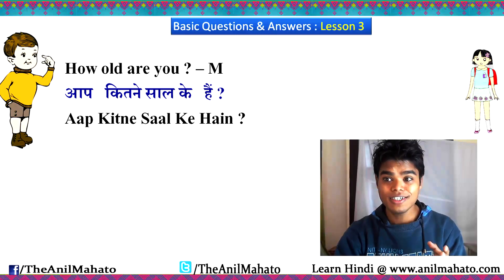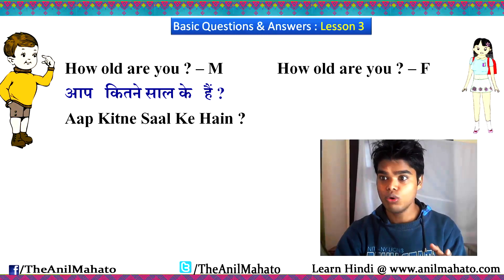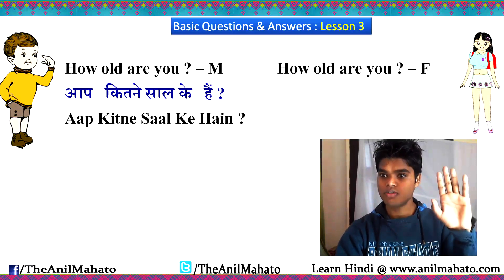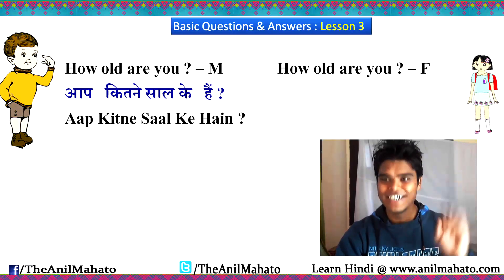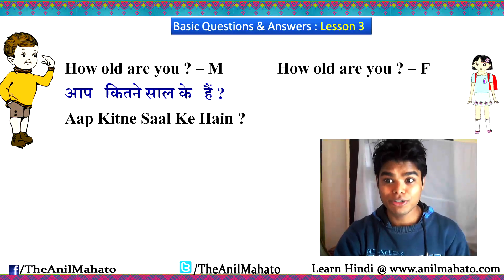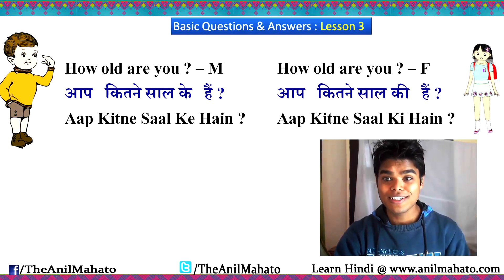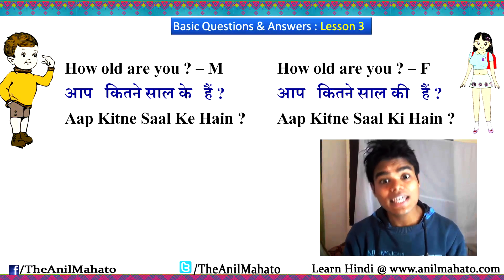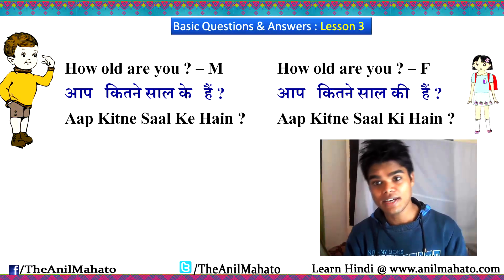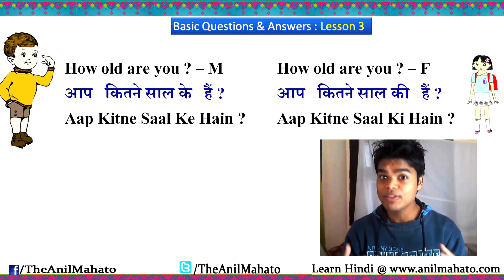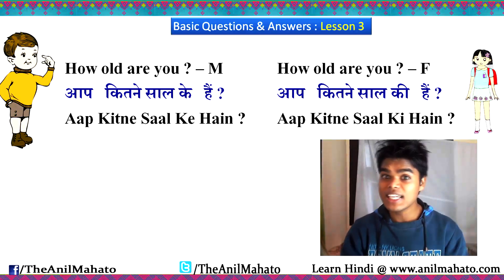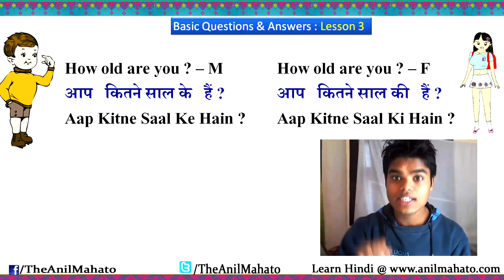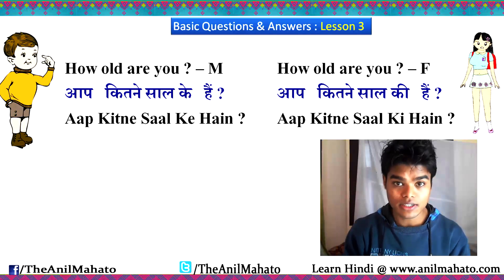If the same question is asked to a girl, 'how old are you' to a female, then it will be 'aap kitne saal ki hain.' So the 'ki' here is the feminine factor — 'aap kitne saal ki hain.'